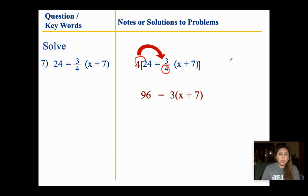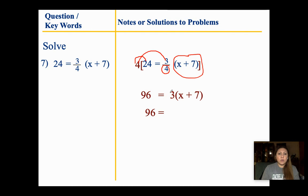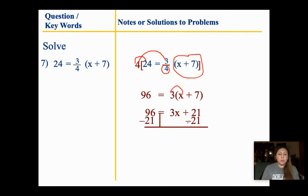Whatever number we have on the bottom, that's what we multiply by. When I distribute 4 to the 3/4, since that piece is connected to it by multiplication rather than a plus or minus sign, I don't have to touch it separately. So from here: 96 equals distributing into 3x plus 7 gives me 3 times x is 3x, and 3 times 7 is 21. Using my upside-down T, I subtract 21 from both sides. 96 minus 21 is 75 equals 3x. My 21s go away. Divide both sides by 3: 3 goes into 75 twenty-five times. So x equals 25.